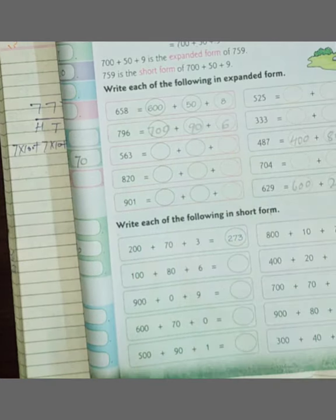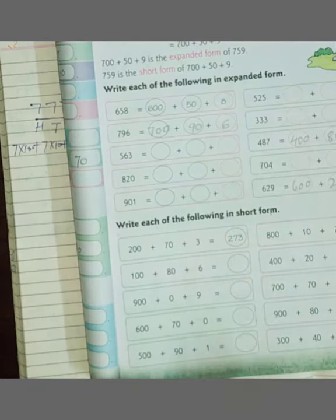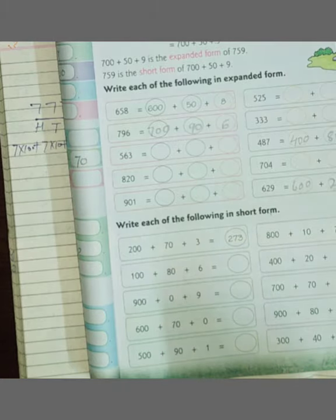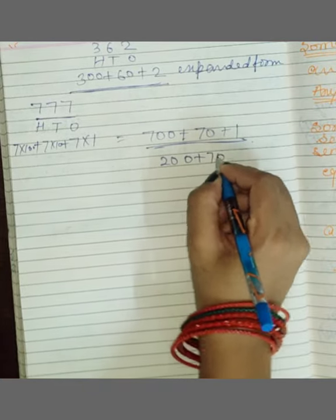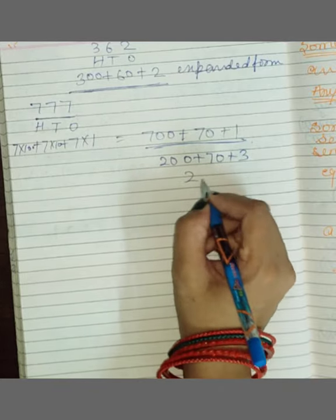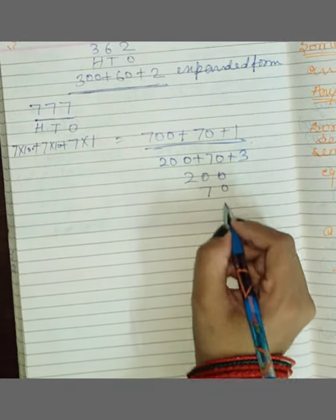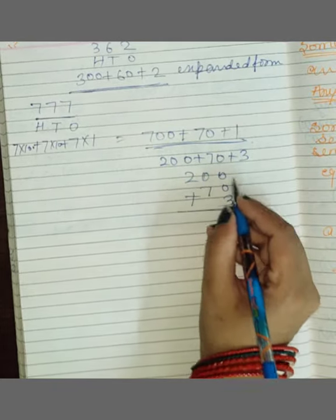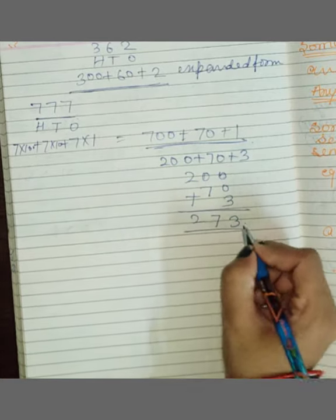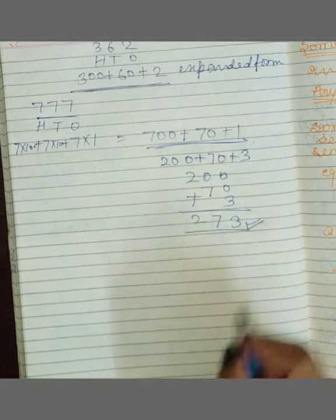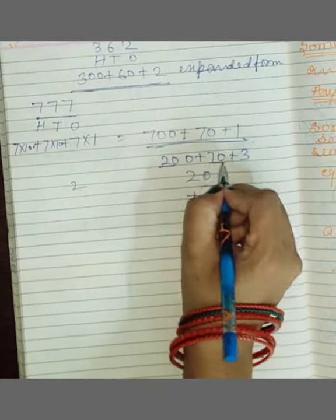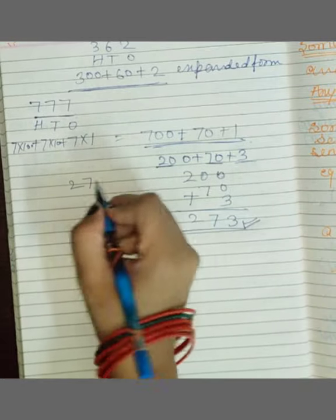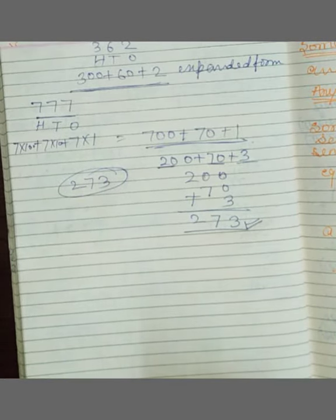Write each of the following in short form. Short form में हमें add कर देना है. Suppose it is given 200 plus 70 plus 3. अब इसको क्या से करेंगे? 200 लिखा, फिर 70 लिखा, फिर 3 लिखा. अब इसको प्लस कर दीजे. 273, short form क्या आ गया? 273. Otherwise, simple भी लिख सकते हैं. पहला letter 2, यहां पर क्या है? 7, और लास में क्या दिया? 3. It will become 273, like this.